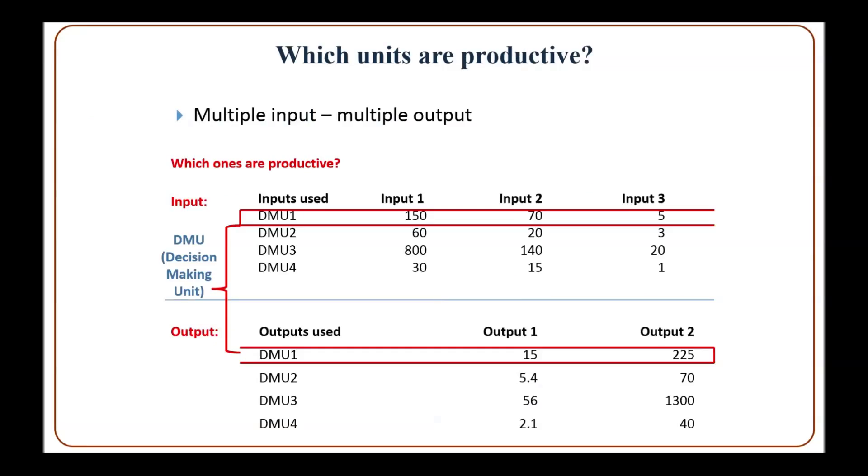What if we have multiple output and multiple input models? Then how can we calculate the efficiency for each DMU?